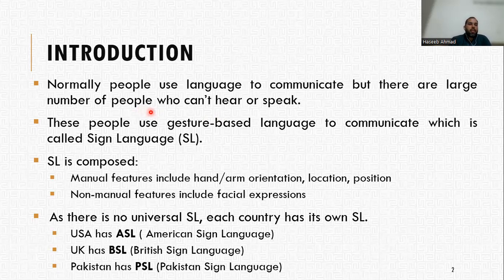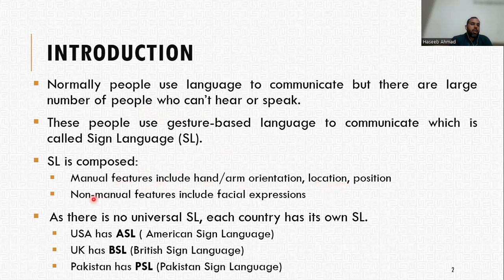Not only people use language to communicate, but there are a large number of people who can't hear or speak — we usually call them deaf or mute people. These people usually use gesture-based language to communicate, which is called sign language. Sign language is majorly composed of two components: manual features that include hand, arm orientation, location or position, and non-manual features that include facial expression.